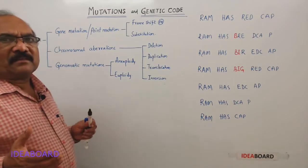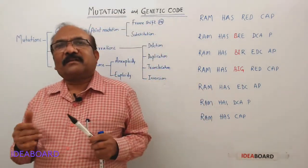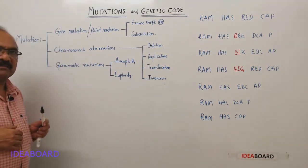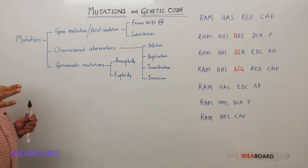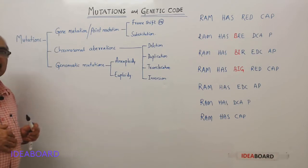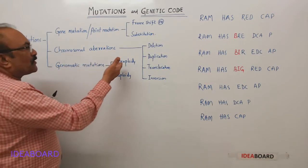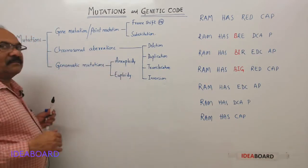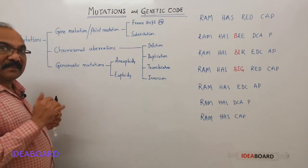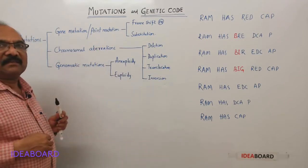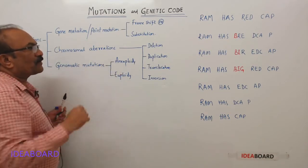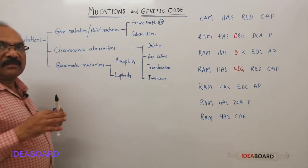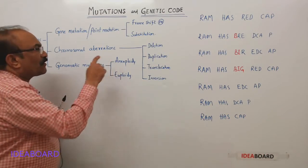The third type is genomic mutation, where the change is in the genome. The genome is the haploid set of chromosomes — the genetic constitution present in the haploid set of chromosomes. Changes in the genome are of two types: if there is deletion or addition of one chromosome to the set, it is called aneuploidy (monosomic, nullisomic, trisomic, tetrasomic conditions). If there is a multiplication of the set, it is called euploidy.